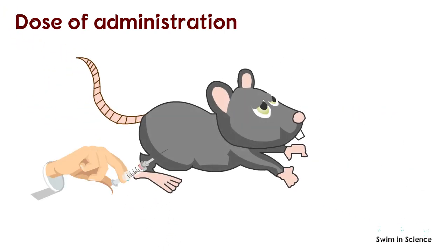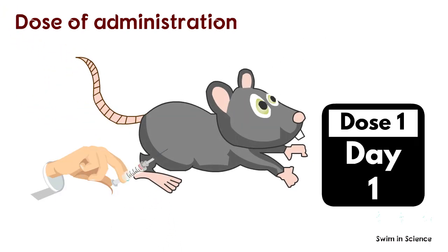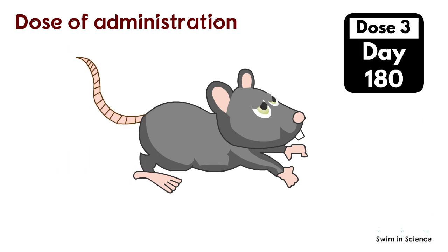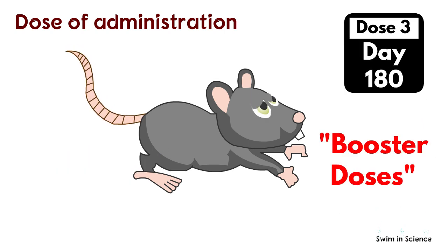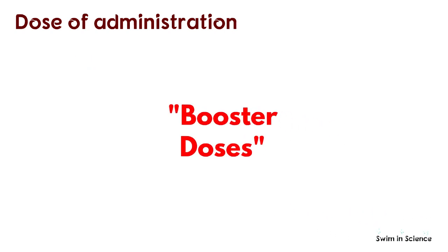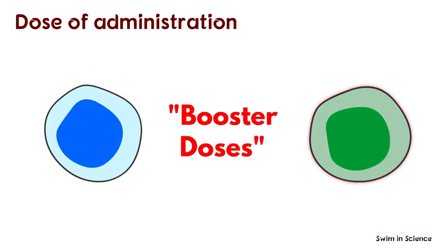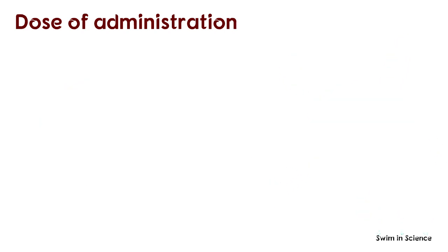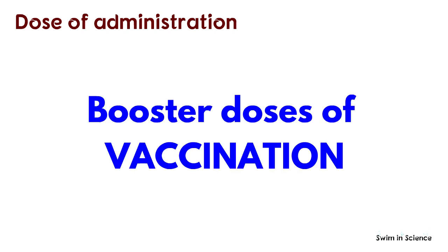Furthermore, rather than a single dose, repeated administration of immunogens — commonly known as booster doses — at regular intervals induces a strong immune response. These booster doses allow the activation of T-cells and B-cells for a long time, and antibodies are produced in greater amounts. This is the principle behind booster doses of vaccination.